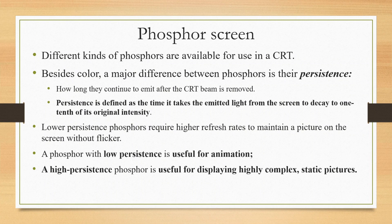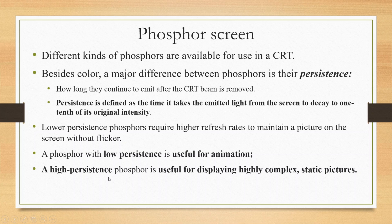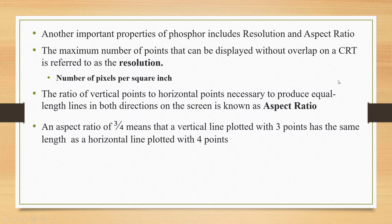To summarize: phosphors come in different colors with persistence as an important property — how long they continue to emit after the CRT beam strikes. Lower persistence phosphors are used in animation; higher persistence phosphors are used for complex static pictures. Resolution is the number of pixels per square inch.